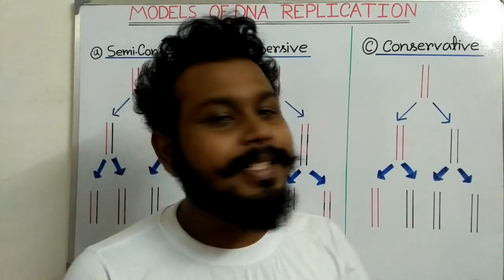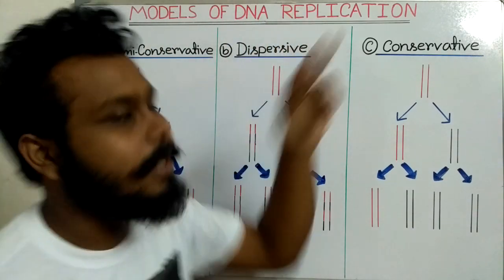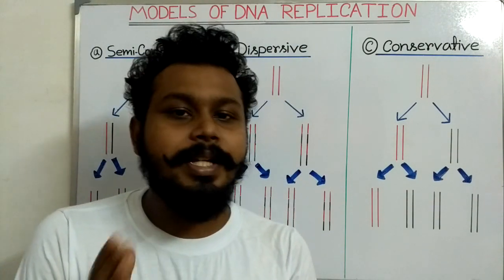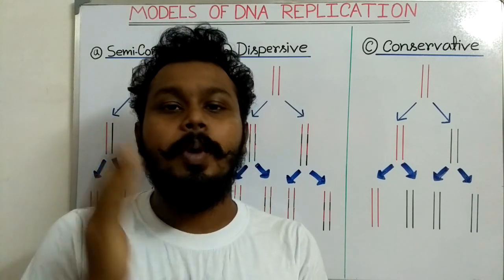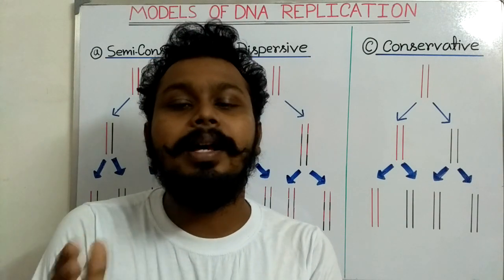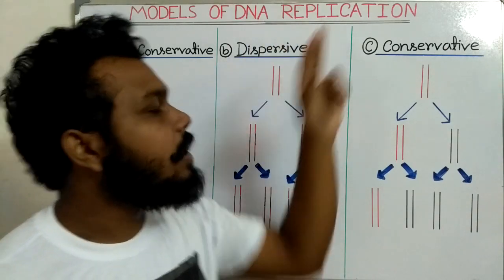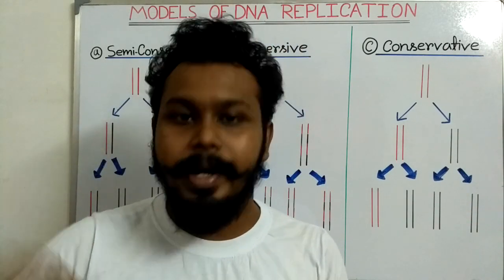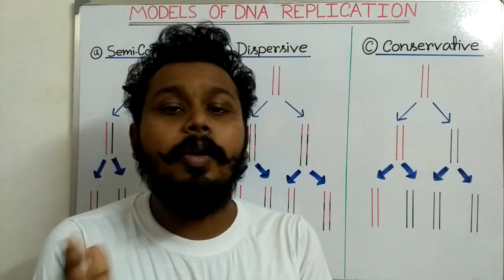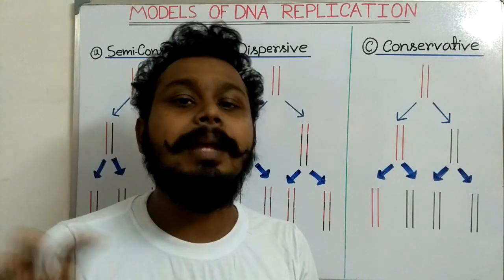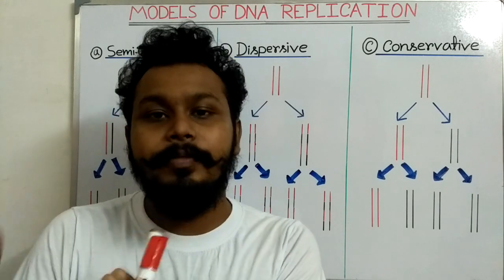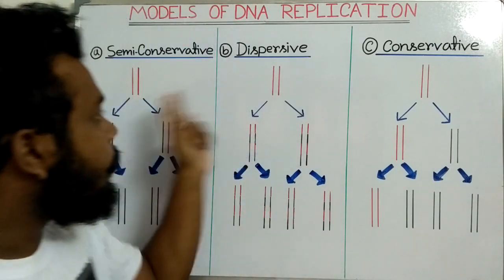Today in this video I am going to discuss about the models of DNA replication. The main basic concept of DNA replication is that it is a process to make identical copies of the parental DNA, or to make a replica of the parental DNA. So that is DNA replication — to make identical copies of parental DNA. Now, how are these identical copies made, or in what manner can DNA replication be done?